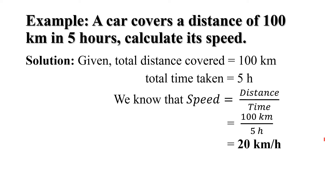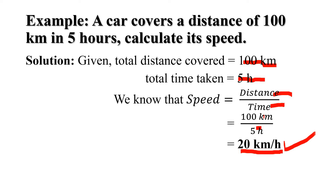Now let us take an example. A car covers a distance of 100 km in 5 hours. Calculate its speed. The total distance covered equals 100 km and the total time taken is 5 hours. We know the formula: speed equals distance upon time. Putting in the values, 100 km divided by 5 hours, we get a speed of 20 km per hour.